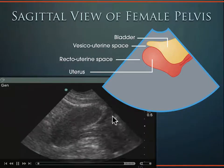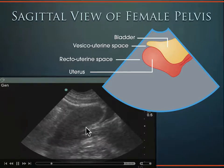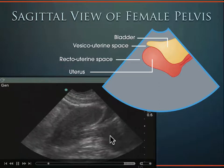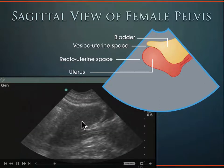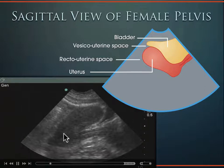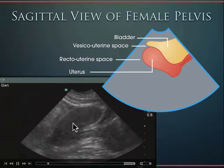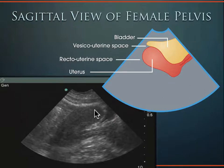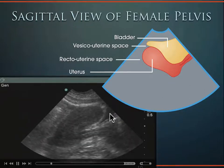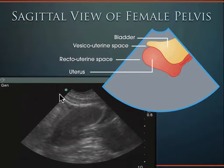In a woman with an empty bladder, the uterus is very flexed — almost 160 to 180 degrees, folding back on itself. The vaginal stripe comes in and makes almost a 180-degree turn back toward the fundus of the uterus. As the bladder fills up, it pushes the uterus anteriorly and changes this flexion angle.